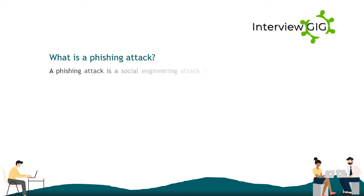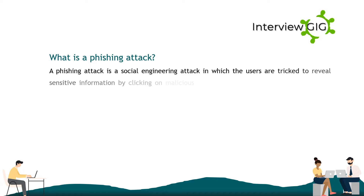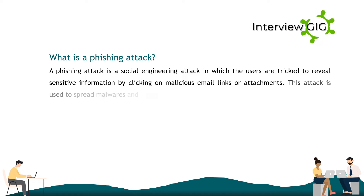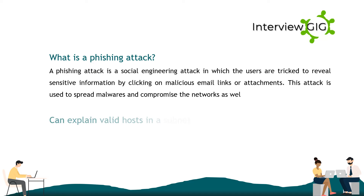What is a phishing attack? A phishing attack is a social engineering attack in which users are tricked into revealing sensitive information by clicking on malicious email links or attachments. This attack is also used to spread malware and compromise networks.